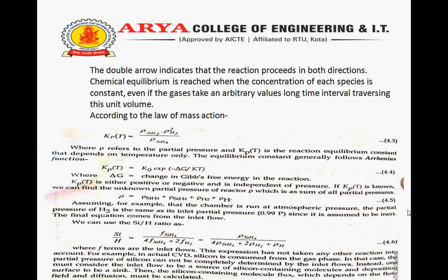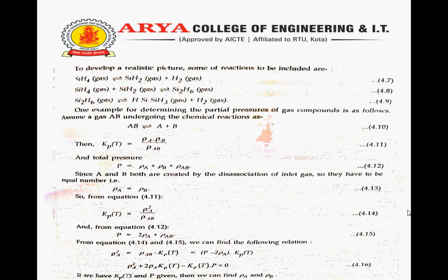From this, Kp(T) = ρ(A)² / ρ(AB), and we find P = 2·ρ(A) + ρ(AB). Substituting, we obtain the quadratic equation: ρ(A)² + 2·ρ(A)·Kp(T) − Kp(T)·P = 0. If Kp(T) and P are given, we can solve for ρ(A) and ρ(B). Thank you.